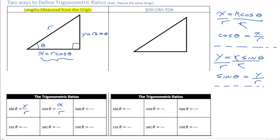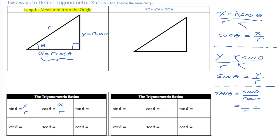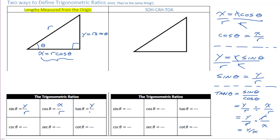The final one is tan. If you remember, tan is just sine divided by cos. We just defined sine as y over r and cos as x over r. So taking the reciprocal and multiplying, the r's cancel out, and we're left with y divided by x. So tan equals y divided by x.